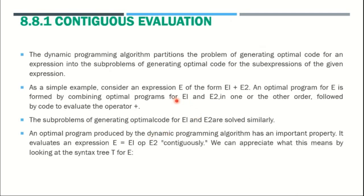First, we combine the optimal code for expression E1 and then expression E2, and then perform the addition operator. First evaluate expression E1, then evaluate expression E2, and after completion of both, perform the addition operation to get the value of E. This expression E1 plus E2 can be divided into sub-expressions: E1 is one sub-expression and E2 is another. In this manner, we divide into several sub-expressions and perform optimal code generation.